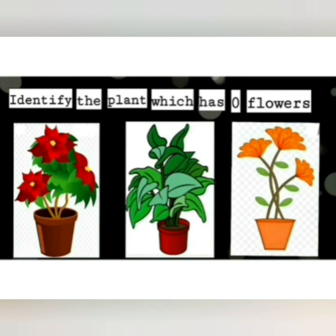Let's move to our next question of this topic. Identify the plant which has 0 flowers. In first picture, can you see any flowers? Yes. This plant has 3 flowers. In second picture, can you see any flowers? No. There are no flowers. In third picture, can you see any flowers? Yes. This plant has 3 flowers. So, which plant is having 0 flowers? The second one because it has no flowers.